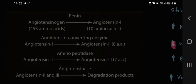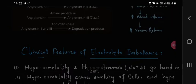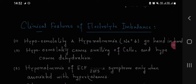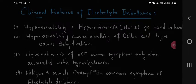Angiotensinogen is of 453 amino acids. Angiotensin-3. Clinical features of electrolyte imbalance. Hypoosmolality and hyponatremia decrease in sodium go hand in hand.